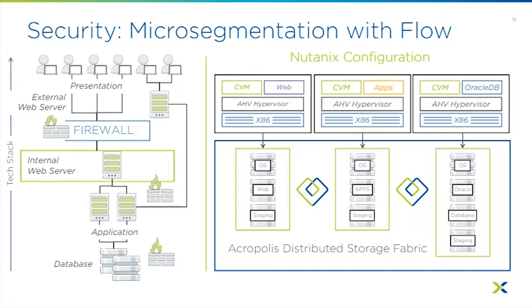Let's talk about security. Using micro-segmentation with our Flow product, if a database has a zero-day exploit, you can quickly segment it off, patch it using Era, then open it back up. The great thing about Flow is it comes pre-built with categories for popular databases, so you can have a rule set up ahead of time and enforce it immediately to isolate the server — keeping only the ports needed to stay online while disabling anything related to the exploit.